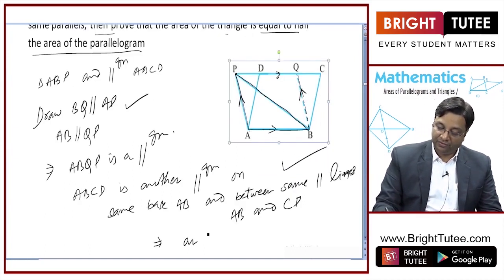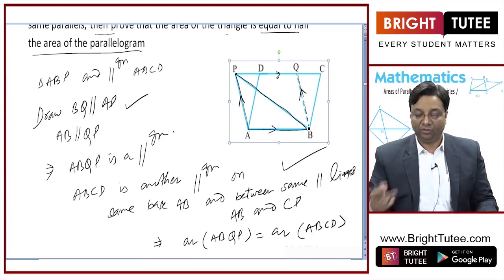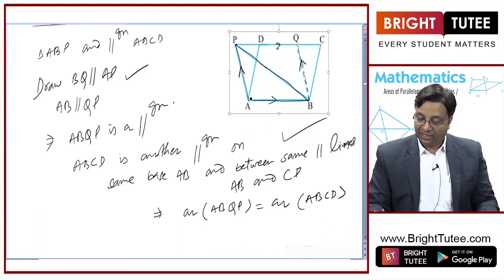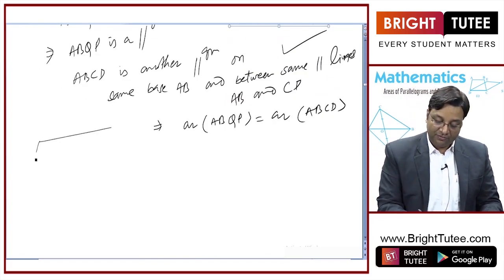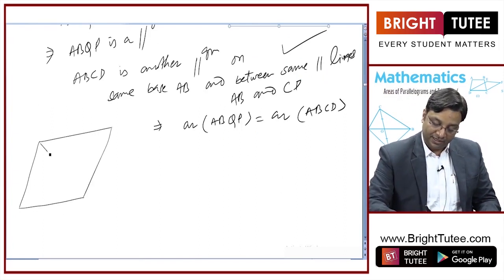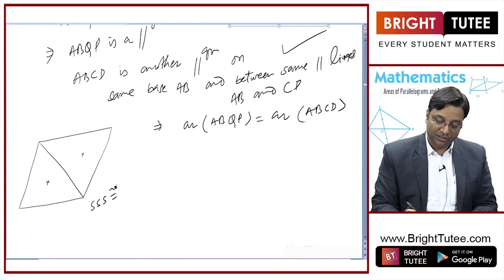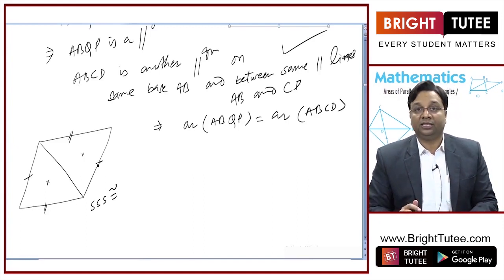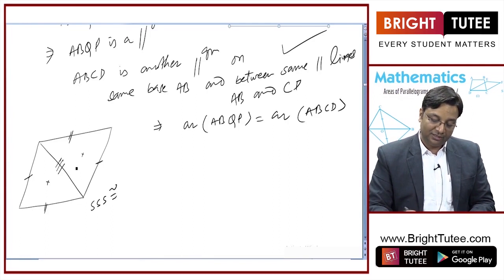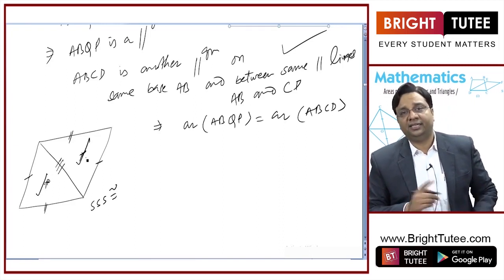Hence area of parallelogram ABQP is equal to area of parallelogram ABCD. We find the area of ABQP because triangle ABP will have half the area of parallelogram ABQP. A diagonal divides a parallelogram into two triangles of equal area by SSS congruence: opposite sides of a parallelogram are equal, and the diagonal is common to both triangles. So by SSS congruence, the two triangles are congruent and have equal areas.